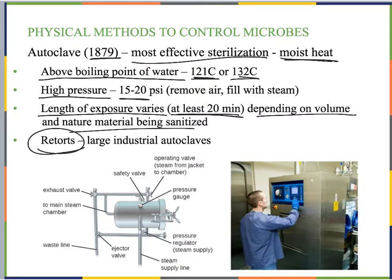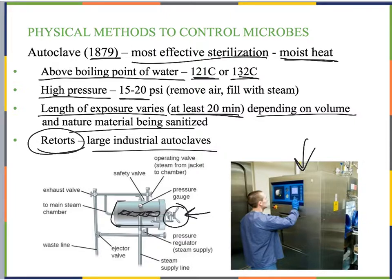A retort is just a large industrial autoclave. We place items inside the canister, close the lid tightly, and set it to go. There's a pressure regulator that releases pressure when done, pressure sensors to monitor the pressure and temperature inside, and timers to let us know when to remove items. Large industrial autoclaves have digital controls that go through the entire autoclaving process.